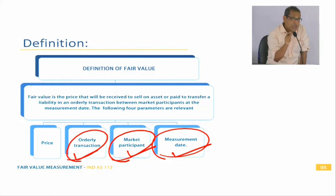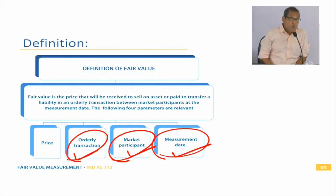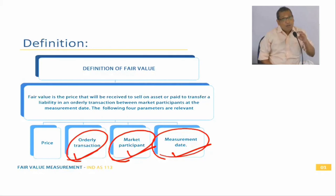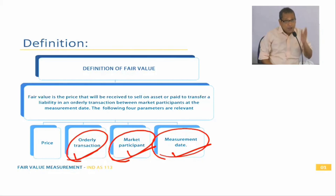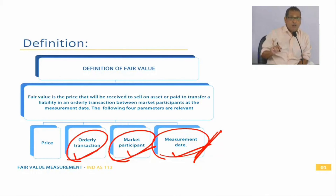The measurement date is important because fair values can change: on 2nd January a fair value might be 40 rupees, on 3rd January it could be 49. For example, Infosys's fair value yesterday was 830 rupees and today it is 942 rupees. The quoted market price is the Level 1 input for determining fair value, but the measurement date is critical because once the date changes, fair value may change dramatically.